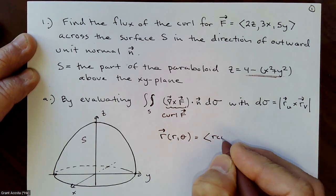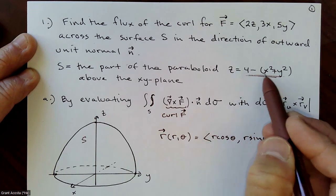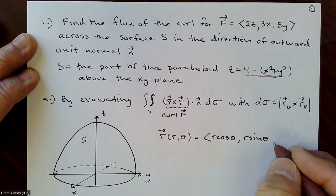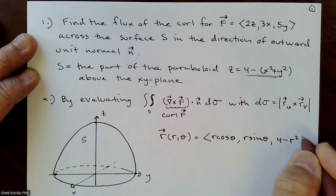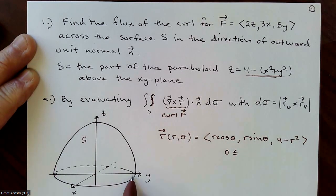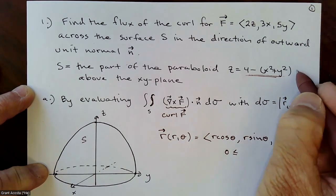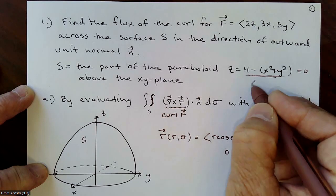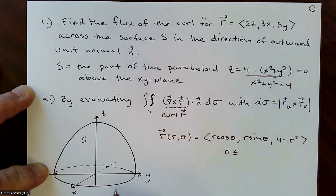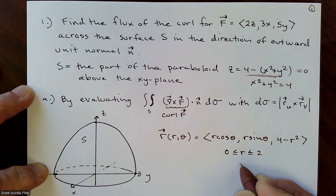For x we use r cosθ, y is r sinθ, and since x² + y² = r², z = 4 − r². At the bottom, where the paraboloid intersects the xy-plane, setting z = 0 gives x² + y² = 4, a circle of radius 2. So r runs from 0 to 2, and θ goes from 0 to 2π.